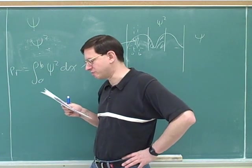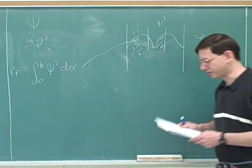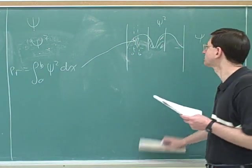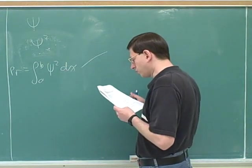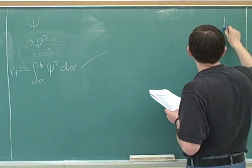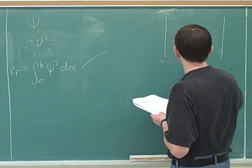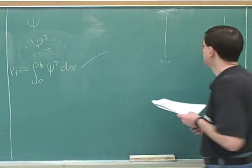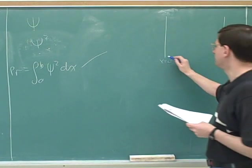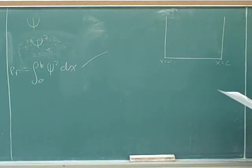The wave function itself doesn't really have much meaning, but the square has a meaning because it tells us the probabilities. So moving along — in this example, we're told we have a particle that is trapped in a box of length L. This is what's called trapped in a box. The ends of the box are 0 and L.